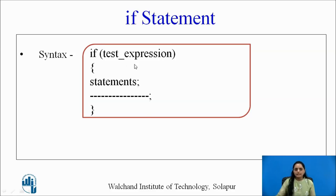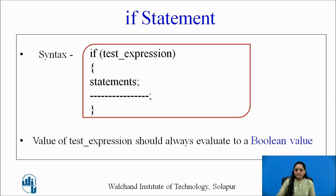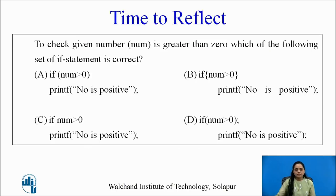Let us look at the syntax of how `if` is written. The keyword `if` is followed by the test expression in round brackets, then a pair of curly brackets containing the statements. Generally, we do not put a semicolon after the test expression. Up till now we have seen every statement in C is terminated with a semicolon — we will see what happens if a semicolon is placed after `if`.